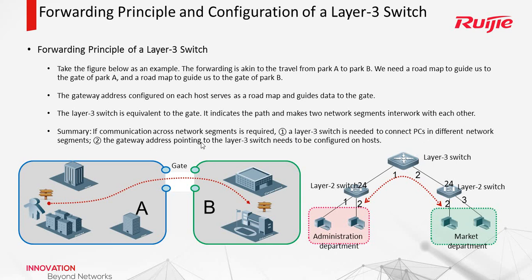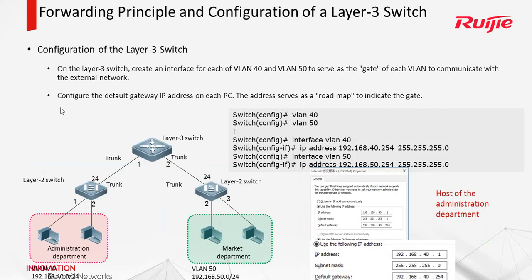The gateway address needs to be configured on hosts. This layer 3 switch acts like a gate, and we need to configure an IP address for this gateway. Now let us see how to configure it. On the layer 3 switch, we configure VLAN 40 and VLAN 50. Then we need to configure the interface VLAN. In this interface VLAN, we can create an IP address, and this IP address is like the gate. For these computers, we configure the default gateway using the interface VLAN IP address.